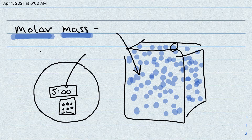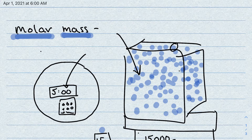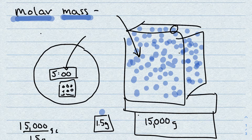So you bring one marble to your scale, put it on the balance, and you see that one marble is equal to 1.5 grams. Then you weigh all of the marbles on a bigger scale and see that all of the marbles together weigh 15,000 grams. You realize that's how much the marbles weigh — you weighed the box, subtracted that out, and you have 15,000 grams. So you do a quick calculation: 15,000 grams total divided by 1.5 grams per marble, and you calculate that you must have 10,000 marbles.